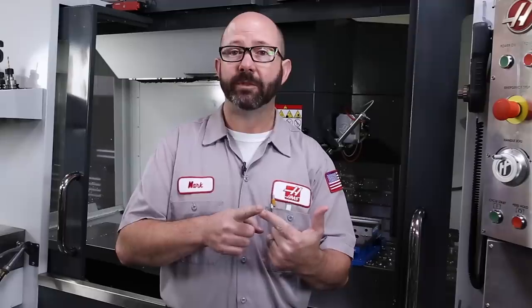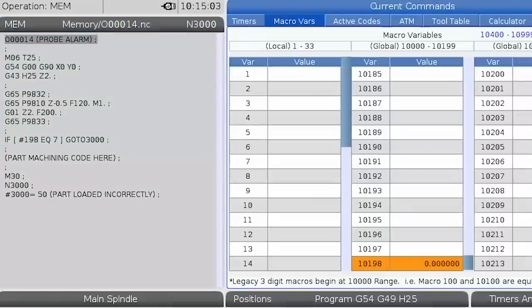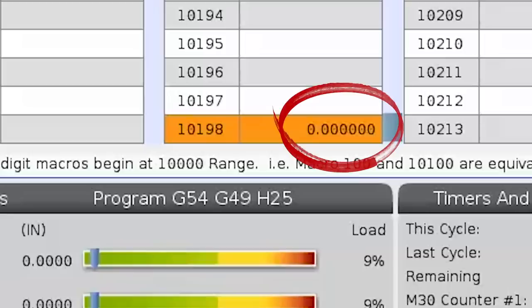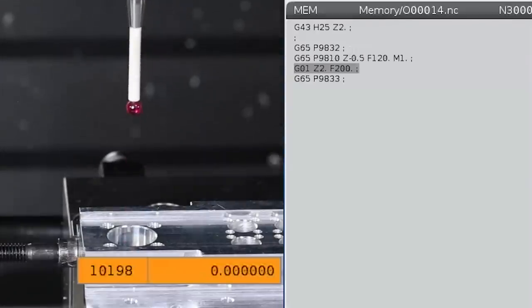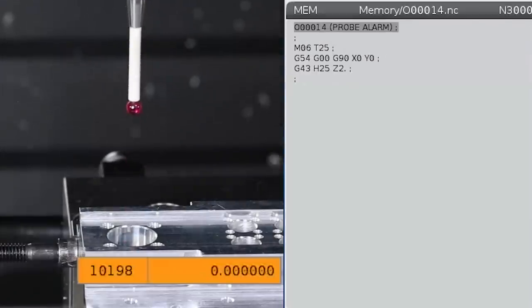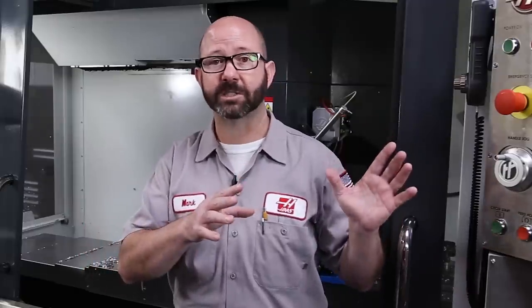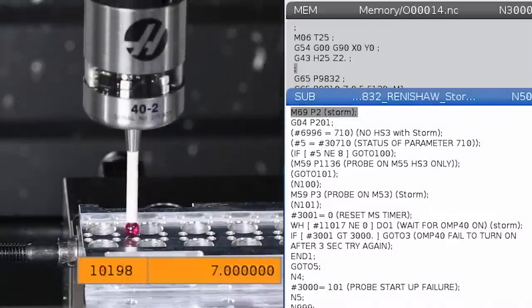And secondly, the control, the program, is going to set a flag for us using macro variable 198. Now this is important. When 198 is set to a zero, that means that the probe was not triggered. And if the macro sets variable 198 to a seven, that means that the probe was triggered.